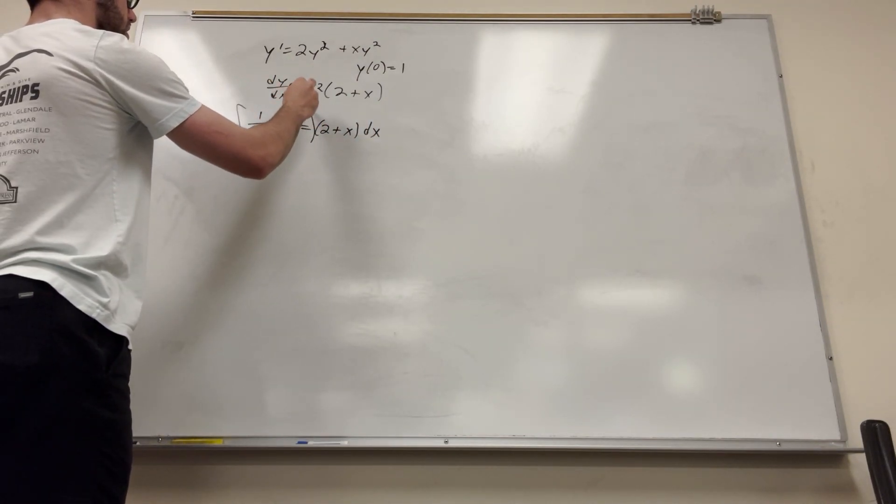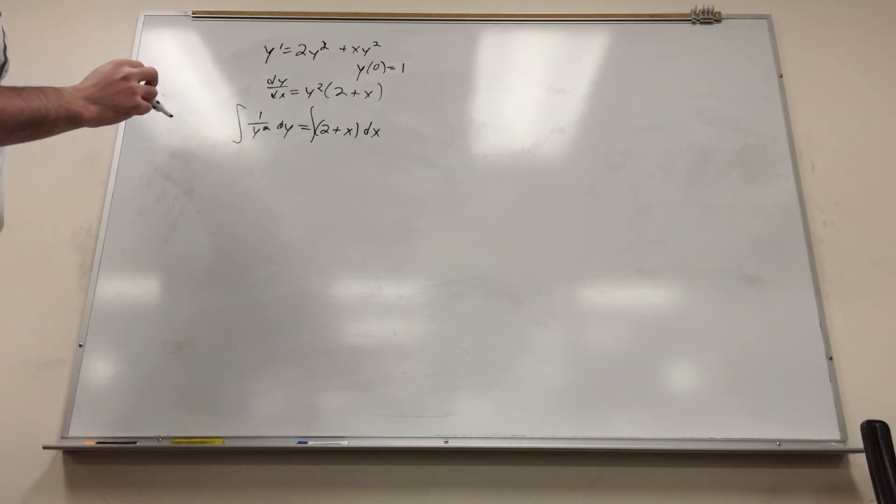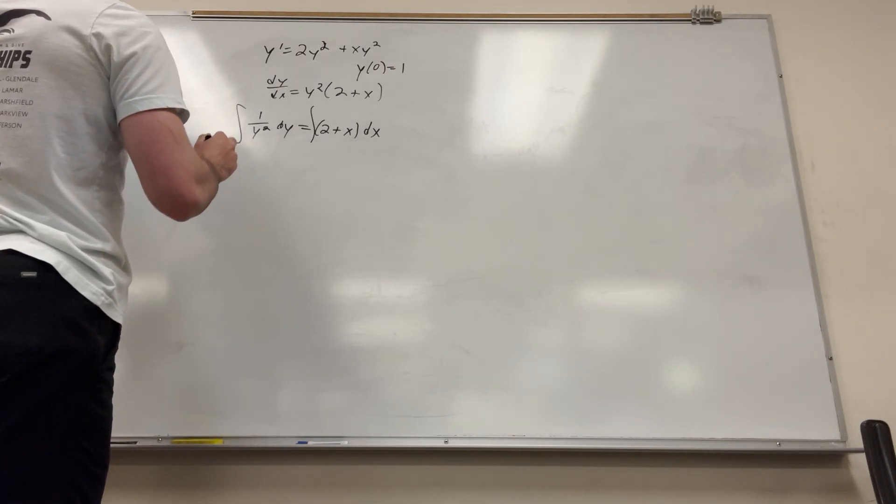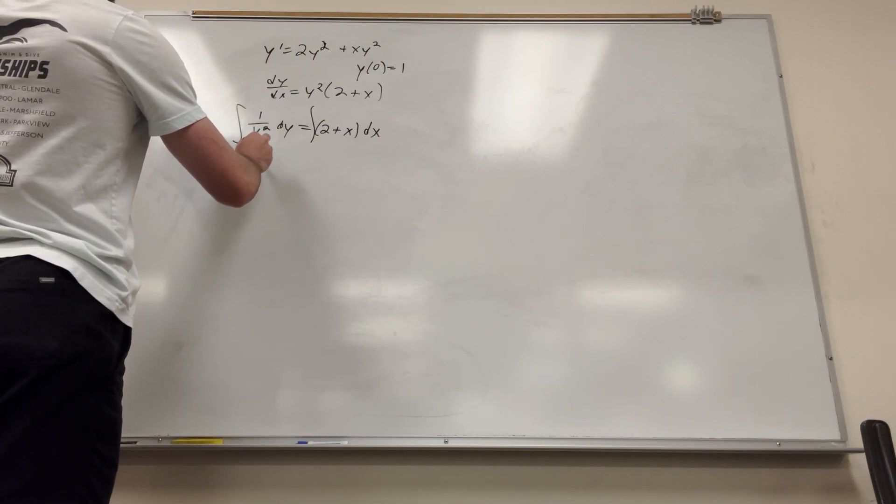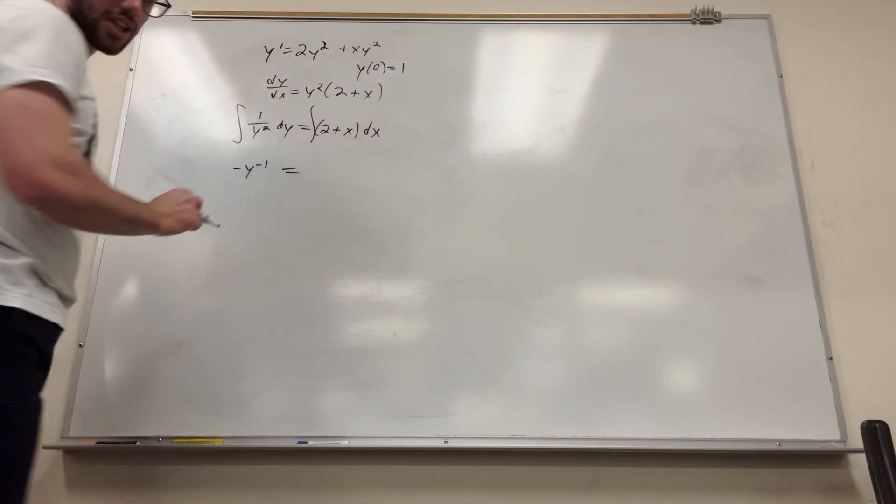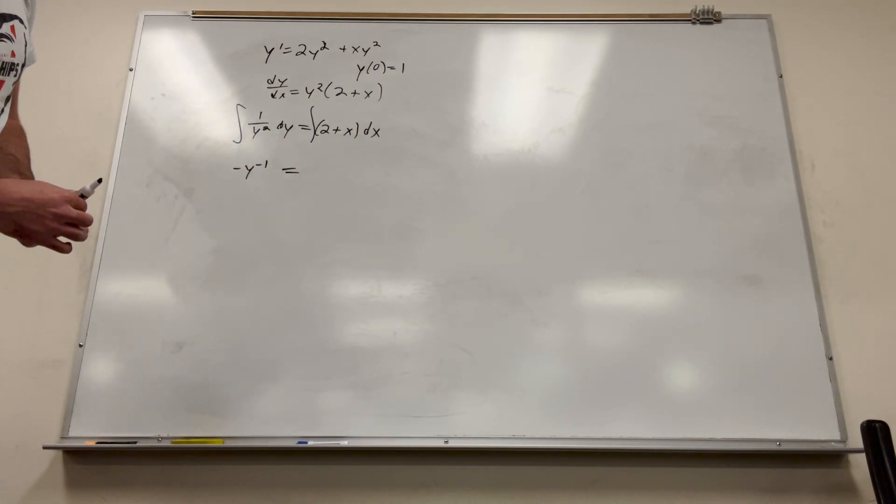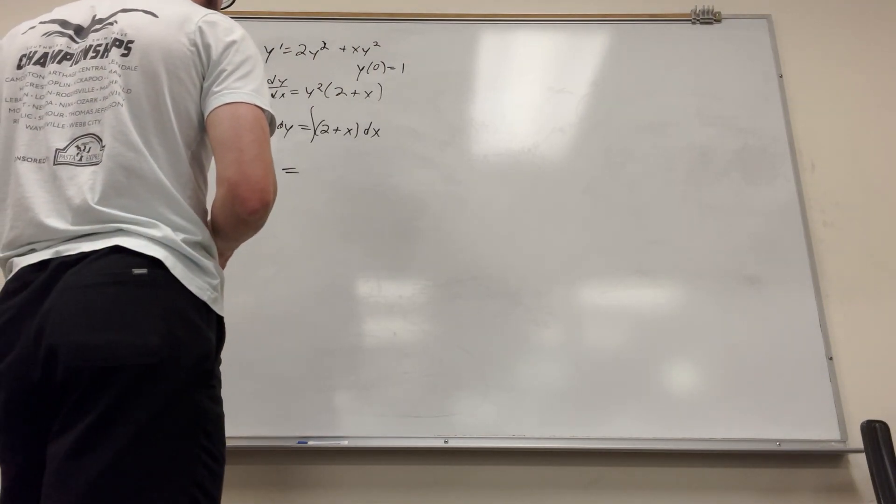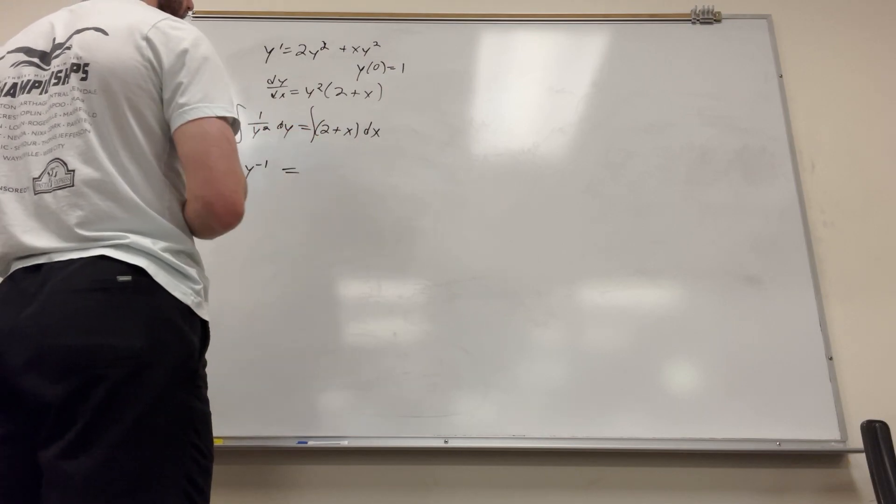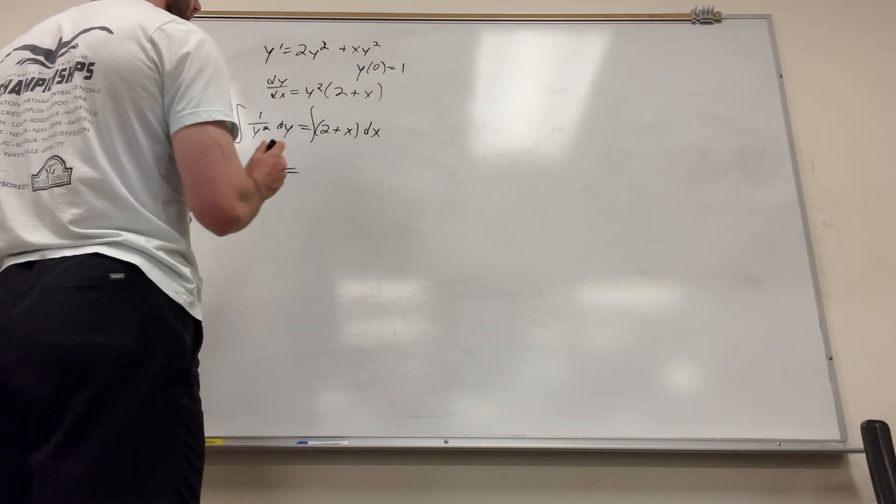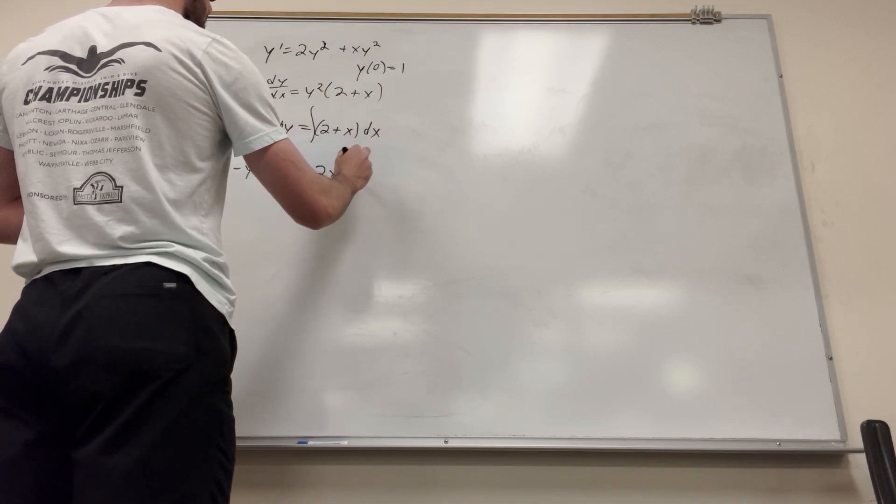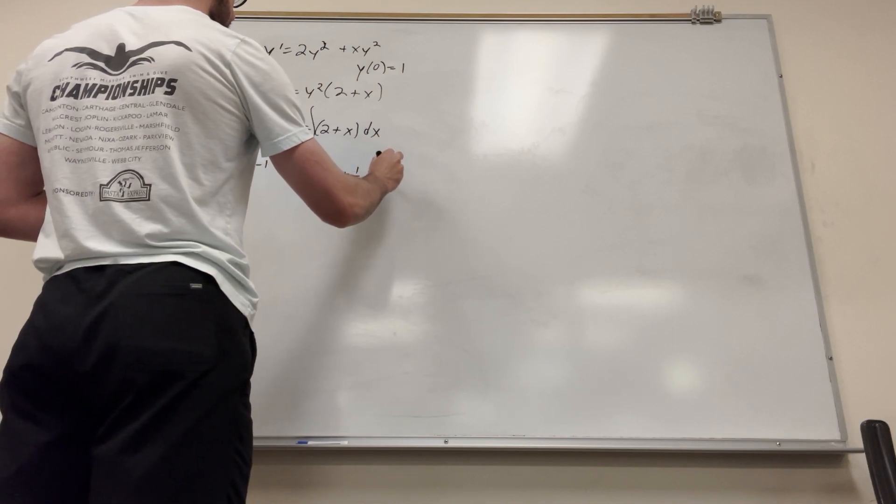Then if we take the integral of both sides, I'm going to have to think about this one. I always hate when I get this. What derivative would make it? I think it's just negative y to the negative 1, right? I'm going to check that. Yes, I did get that right. It's kind of confusing. You can also write it as negative 1 over y. That's probably easier. And plus c, of course.